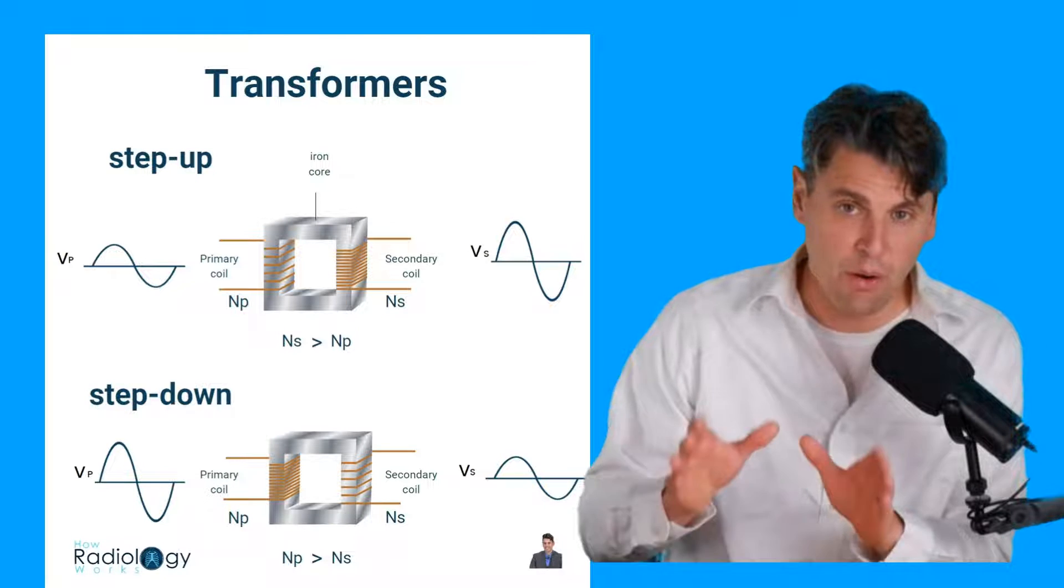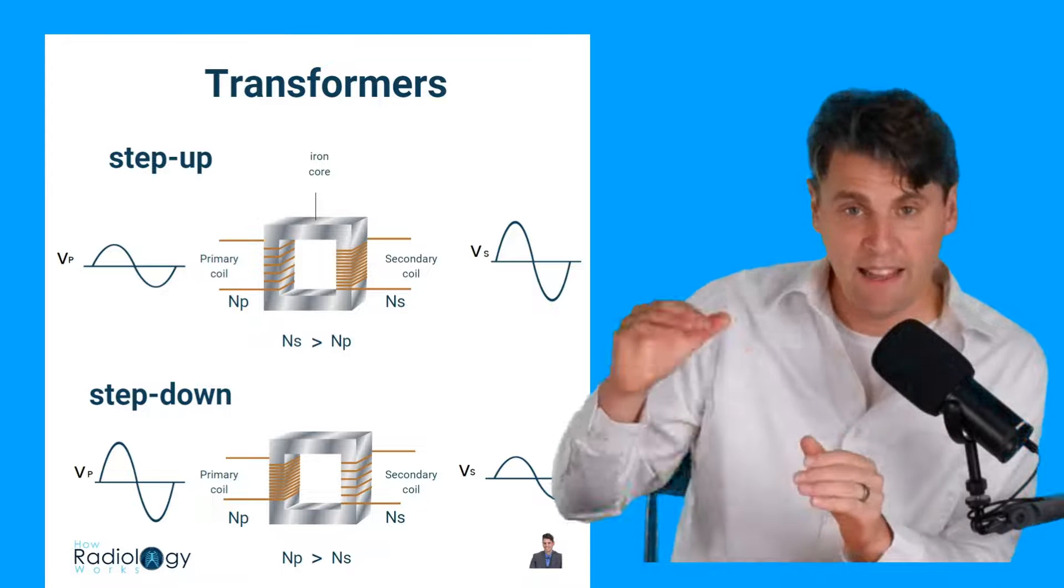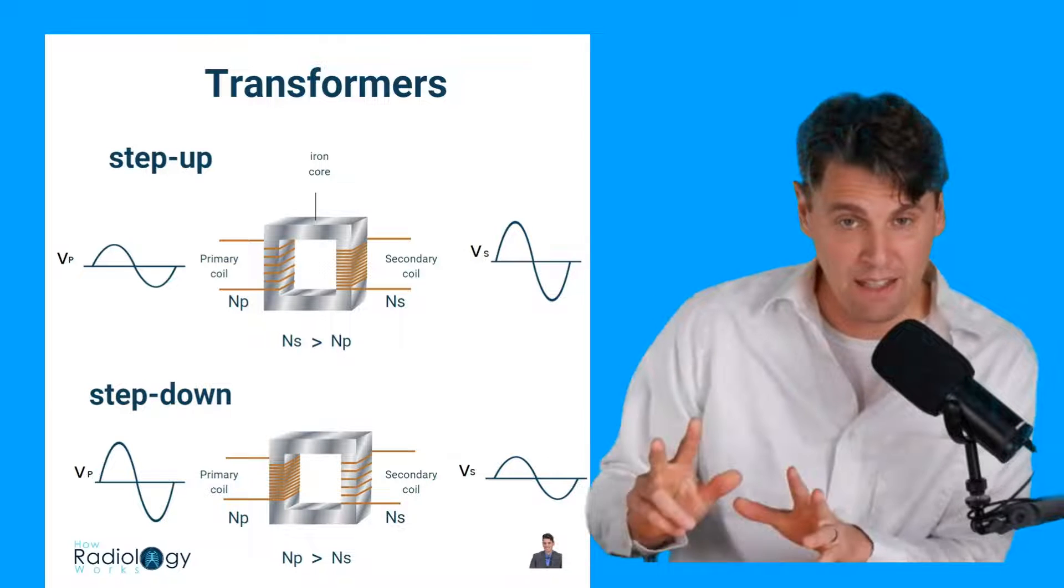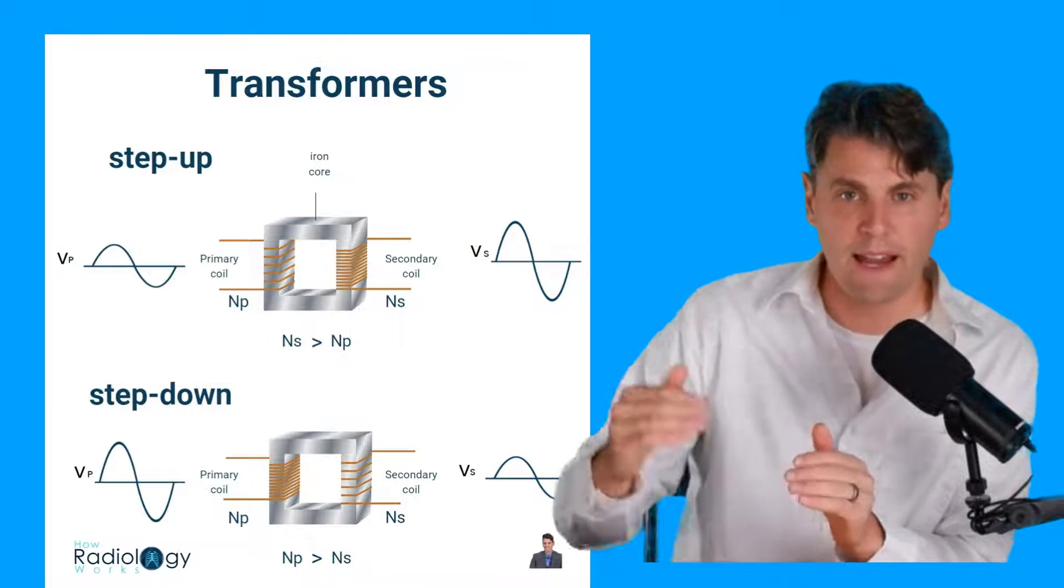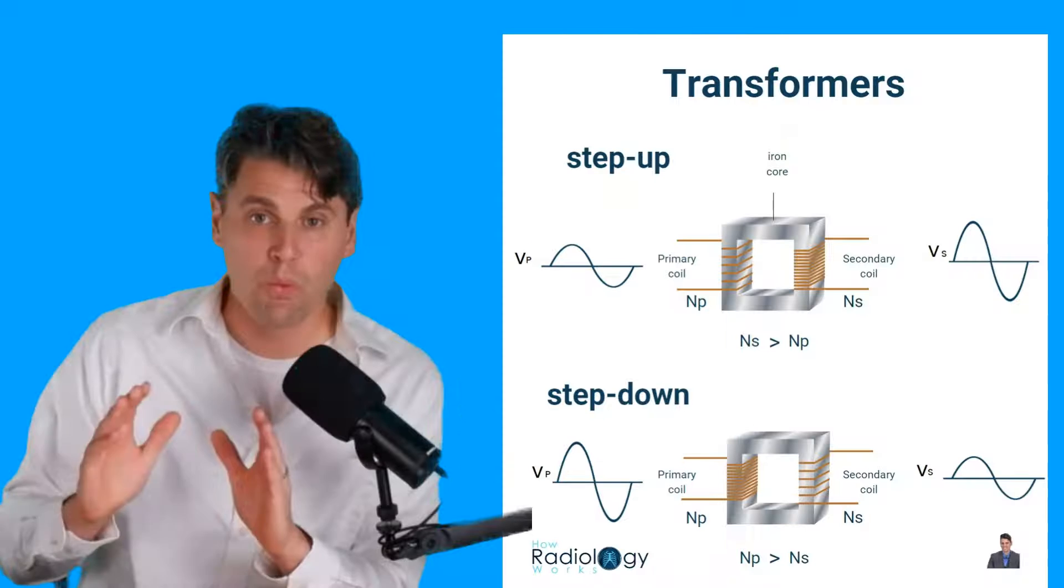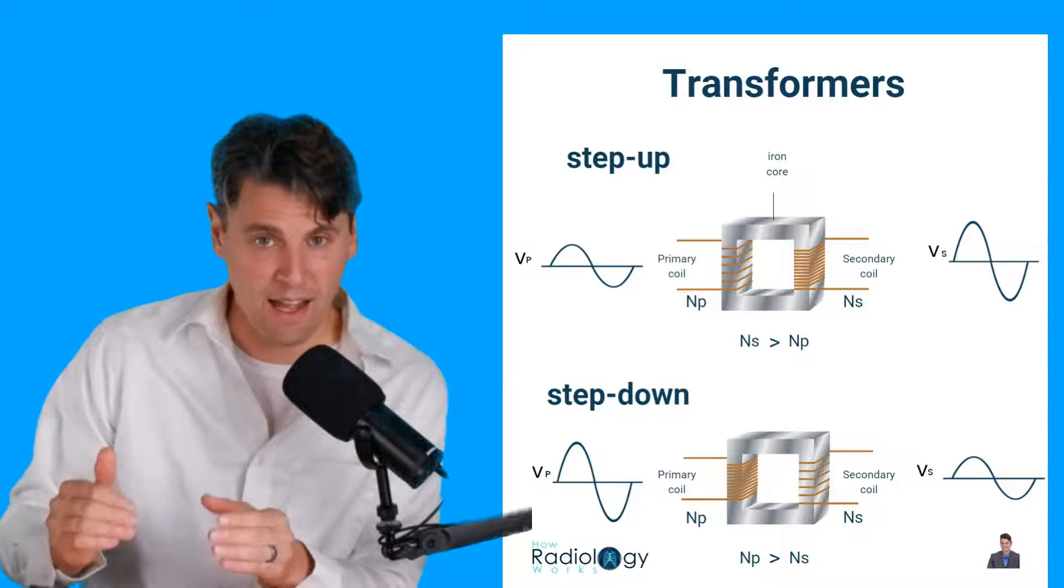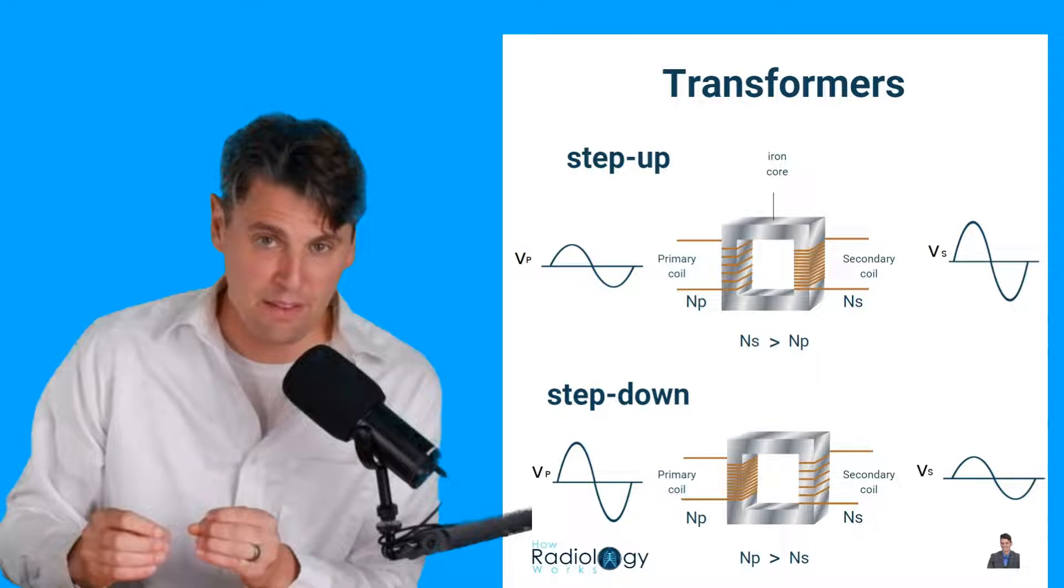In our x-ray circuit, we're going to talk about why we want to do that on the filament or heating circuit because we actually want a lower voltage there. We want a high current or high amps on that circuit. So that's where we want a step down transformer.